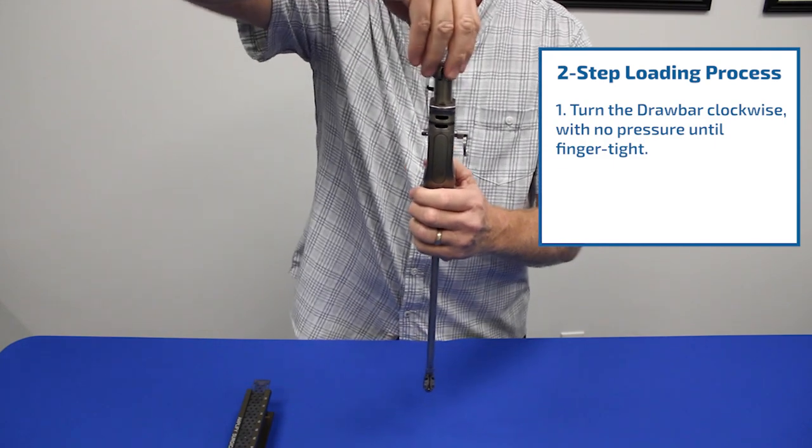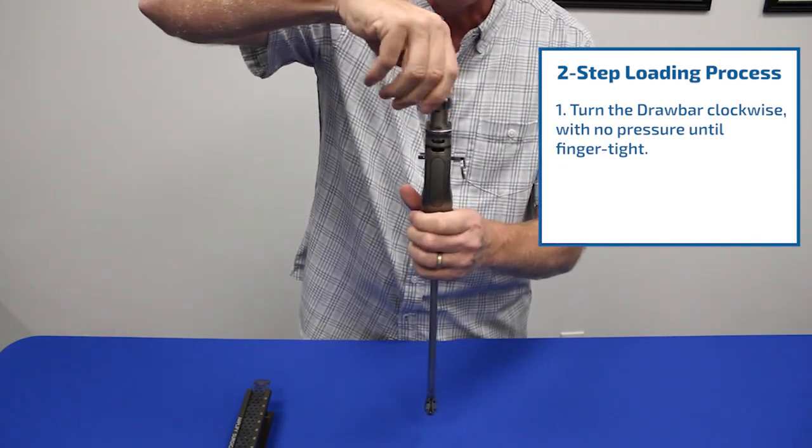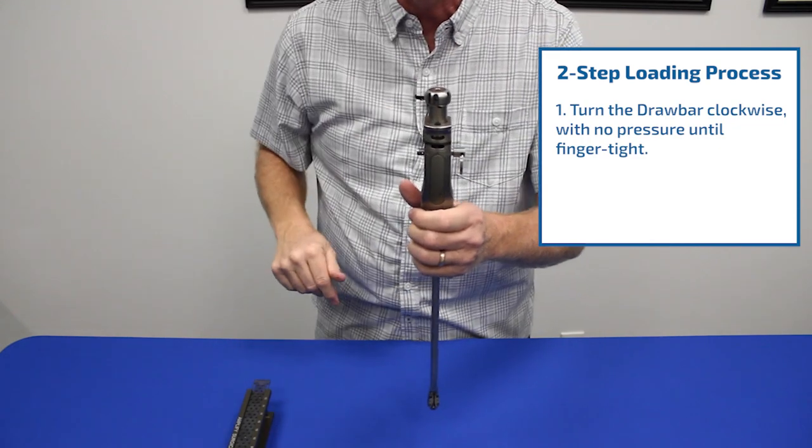The second step is to plunge the draw bar down and turn until it's tight. Again, snug, not tight.